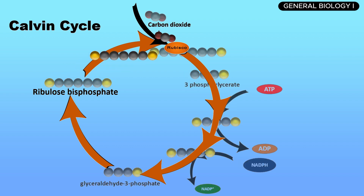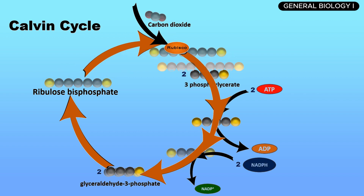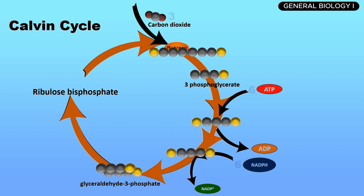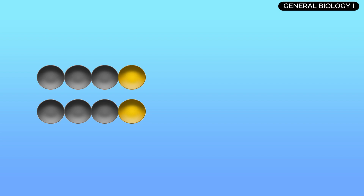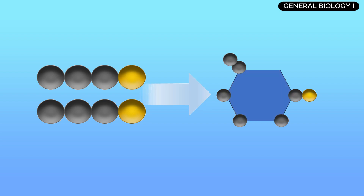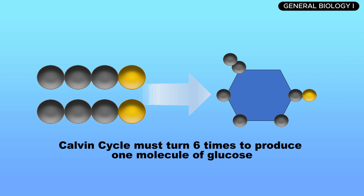For every full turn of the Calvin cycle, five molecules of glyceraldehyde-3-phosphate are used to regenerate three molecules of ribulose bisphosphate, while the remaining glyceraldehyde-3-phosphate is used to make glucose, fatty acids, or glycerol. It takes two molecules of glyceraldehyde-3-phosphate to make one molecule of glucose phosphate. Thus, the Calvin cycle must turn six times to produce one molecule of glucose.